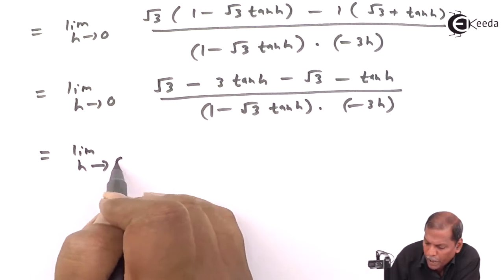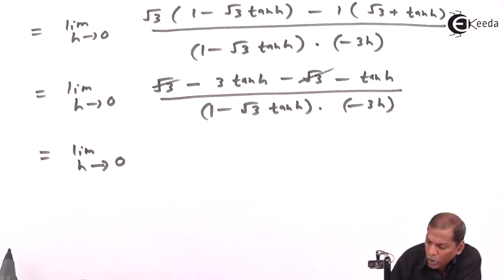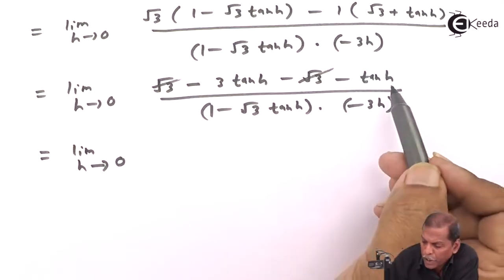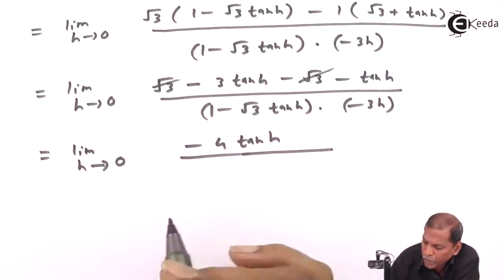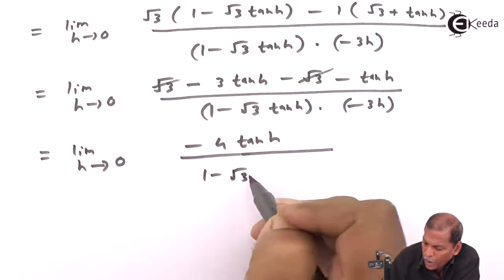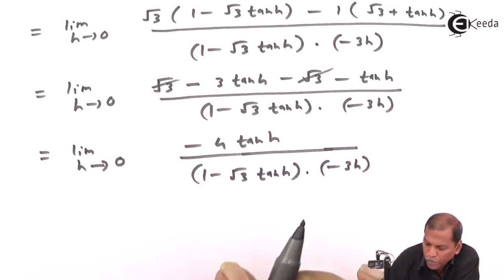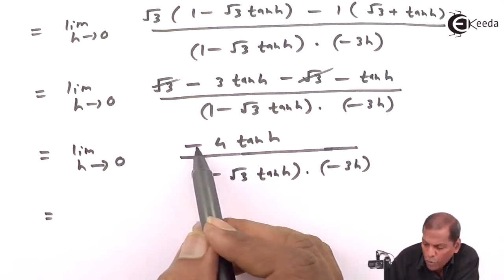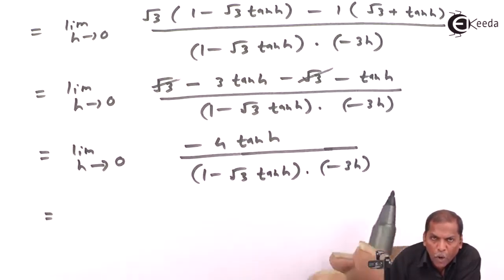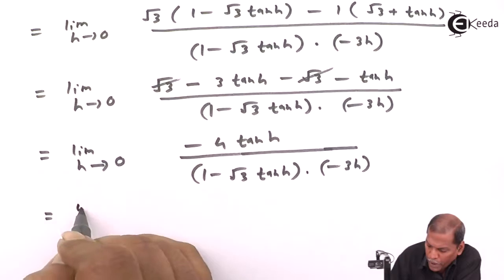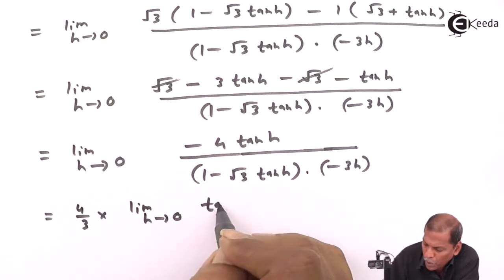After cancellation, −3 tan h − tan h gives −4 tan h in the numerator, divided by (1 − √3·tan h)·(−3h). We cancel the minus signs from numerator and denominator, and take the constant 4/3 outside the limit.